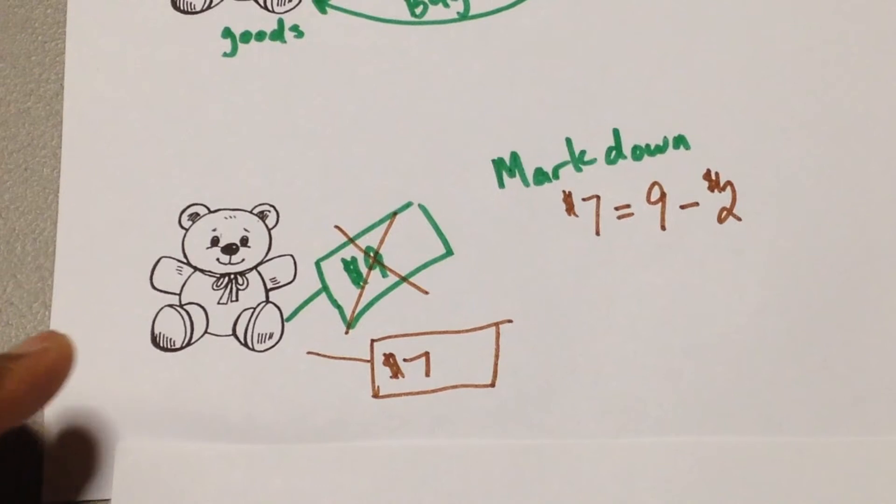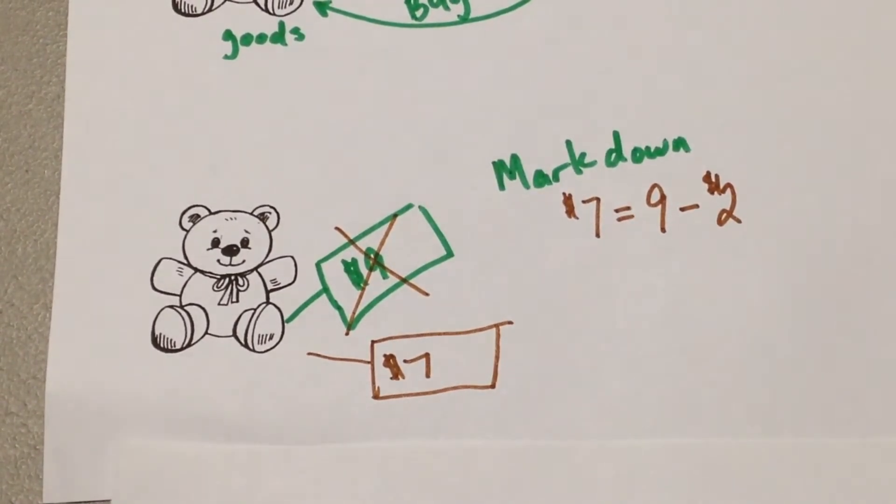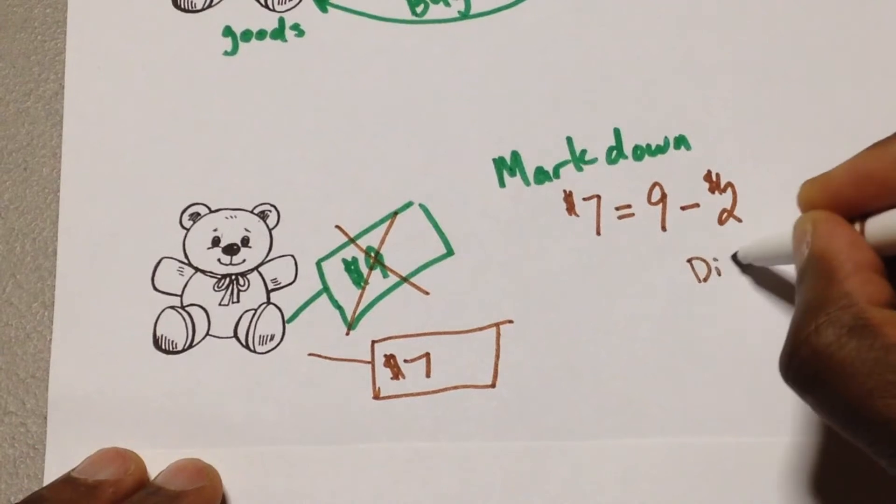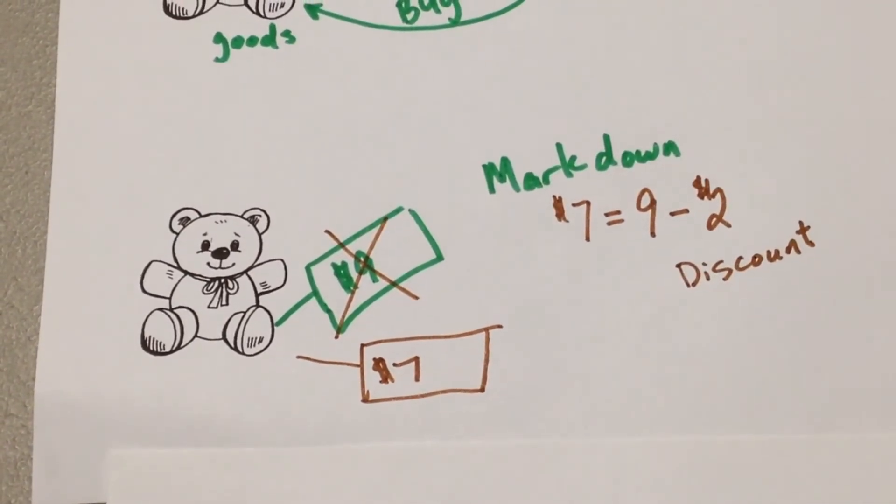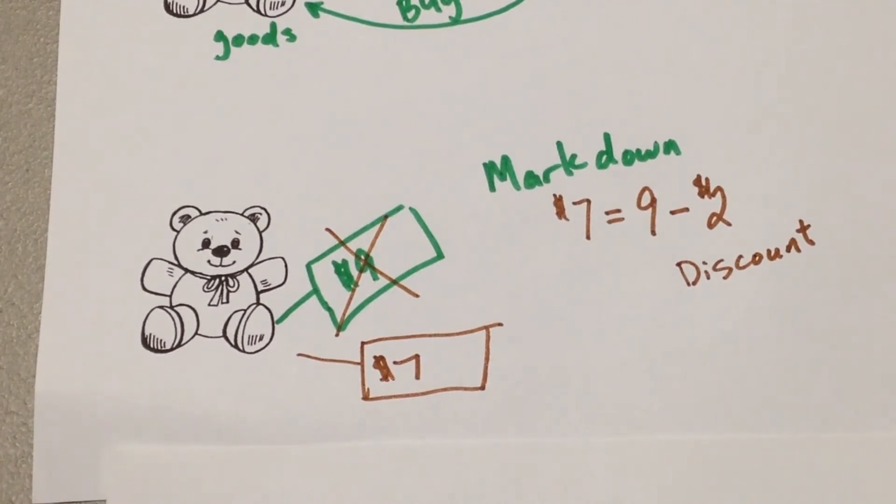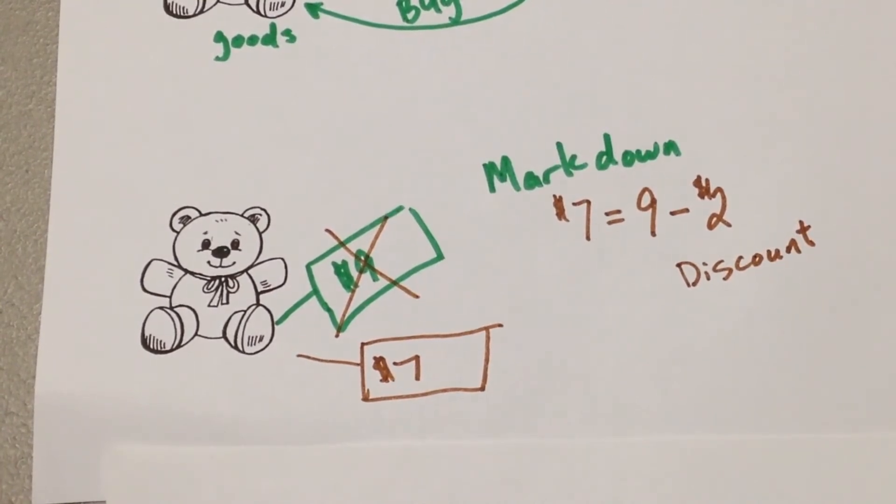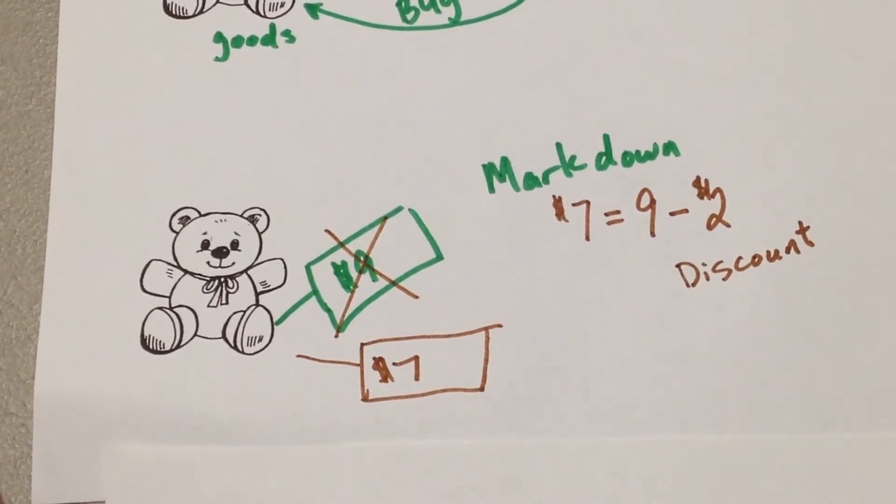So when we bring the price down, why would we want to bring the price down? Well, like we said earlier, to bring more customers in because if there's a discount - because markdown usually deals with the fact that we're creating a discount for customers. So with that, what we're doing is we're bringing more people to come into our business. And also, let's say maybe the teddy bear is not selling so much. We might want to bring the price down so we can get the teddy bears to be sold. We don't want to keep it there. So that would be a markup and a markdown.